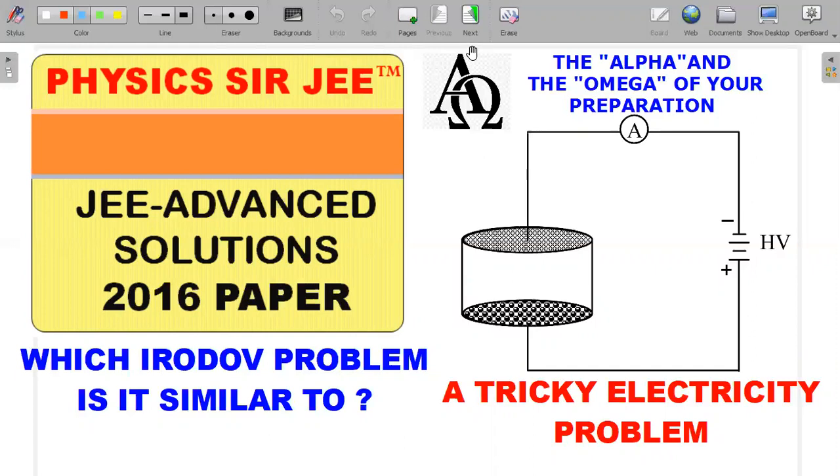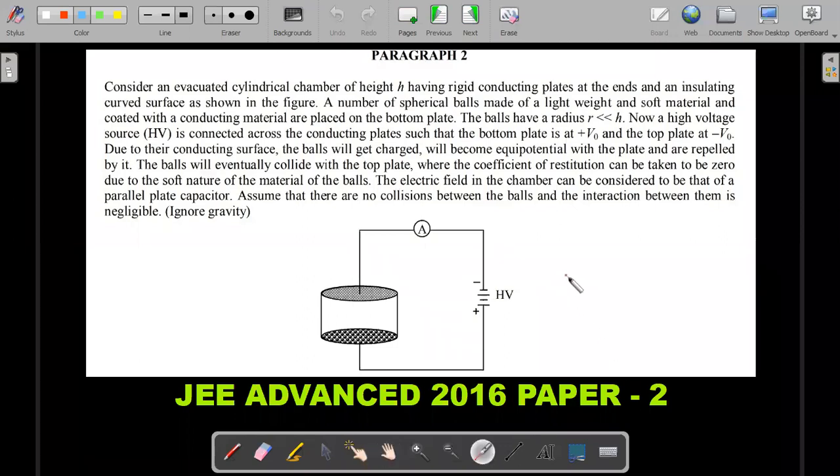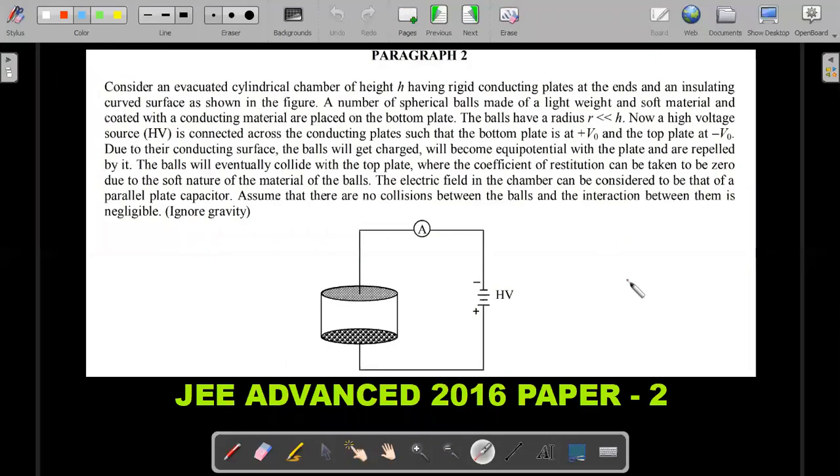So let's move ahead. This is the 2016 paper two. There is a comprehension from current electricity. So here's the passage. In case you have not yet tried it out, I would recommend you to take a snapshot of these two pages and try to solve the problem.